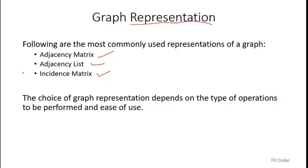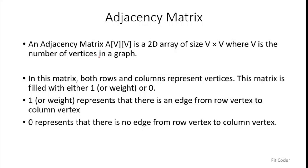I've decided to split the graph representation part into multiple videos. In this video I will focus on the adjacency matrix — first we'll understand the concept, then we'll code it and see what the adjacency matrix looks like when printed. An adjacency matrix is basically a 2D matrix of size V×V, where V is the number of vertices. The data present in this matrix will be either 1 or 0: 1 represents an edge from the row vertex to the column vertex, and 0 represents no edge.